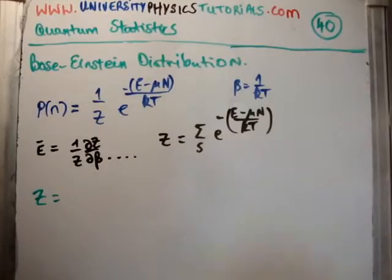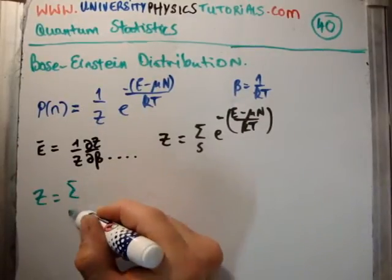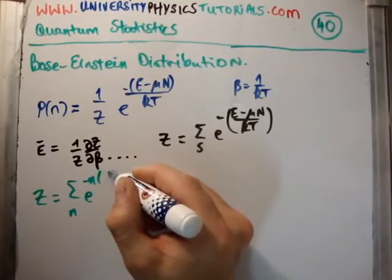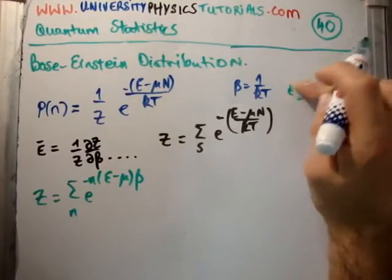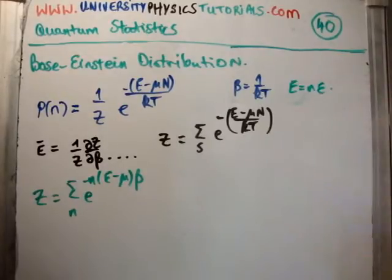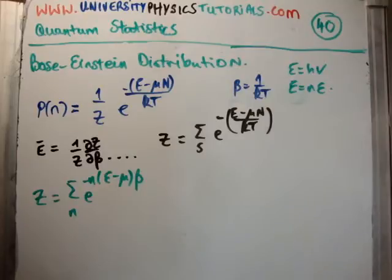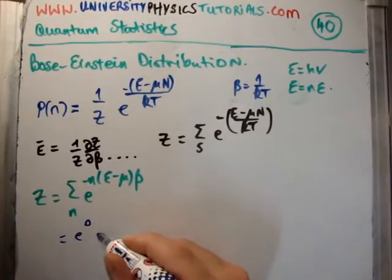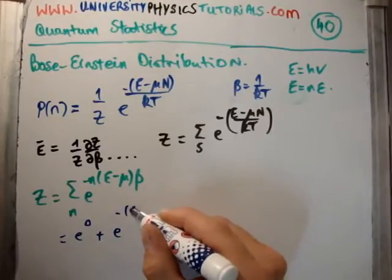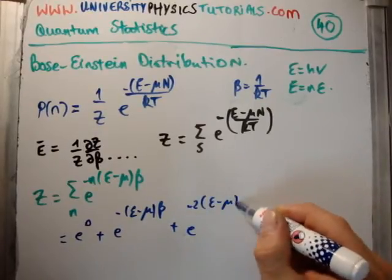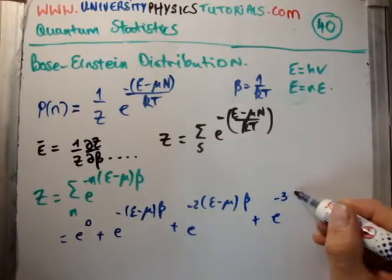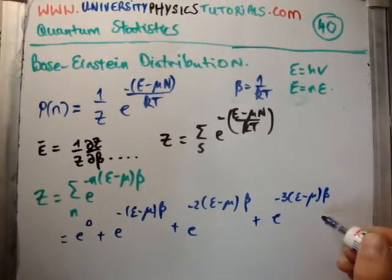So the grand partition function is the sum over N of e to the minus N times (epsilon minus mu) times beta, where the energy is equal to N times epsilon, and epsilon is the quantum of energy equal to h-nu. Writing it out explicitly, it becomes e to the 0 plus e to the minus (epsilon minus mu) beta plus e to the minus 2(epsilon minus mu) beta plus e to the minus 3(epsilon minus mu) beta, and off up to infinity.